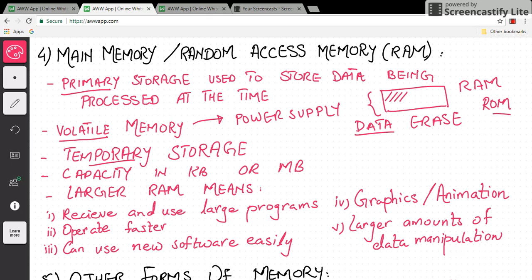RAM capacity is measured in kilobytes and megabytes. The larger the RAM size, the more programs we can run on the computer. With more memory, operations will be faster. The more memory we have to interact with the CPU, the faster the CPU will work. If we have new software or new technology, we can use it easily with more memory.